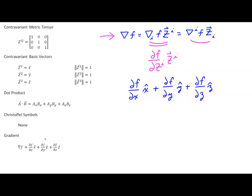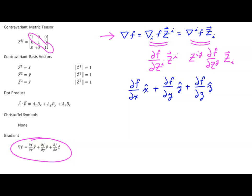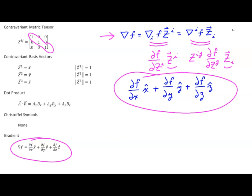If you look at this particular form, you'll remember you start with z^{ij} — this is the contravariant derivative — z^{ij} times the covariant derivative with respect to j. So this is just the partial of f with respect to z_j times the covariant basis vector z_i. In this case, the z^{ij} factors are just one all the way down the diagonal, so we only have to deal with three terms. Along with the fact that the contravariant and covariant basis vectors are identical, these two expressions give the same result.